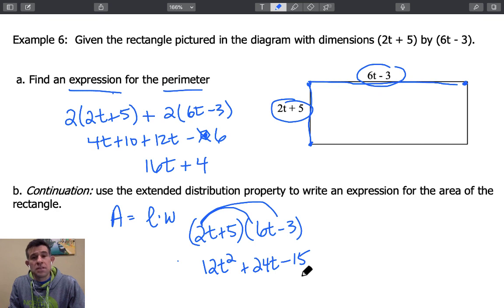Did you get 12t squared plus 24t minus 15 as the expression for the area of this rectangle? If so, you're tracking with what we're doing. If not, maybe you want to go back and give it a shot or try the geometric representation and fill in all the areas of these boxes individually like we did in previous examples.